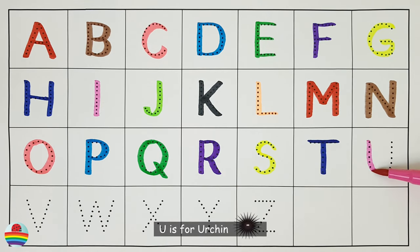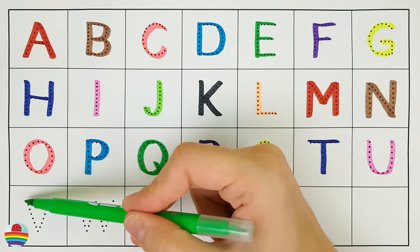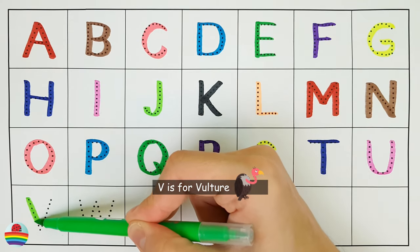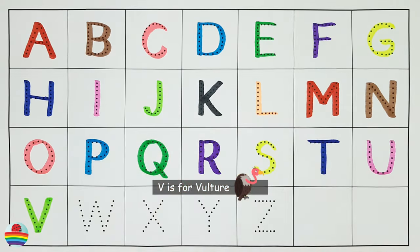U. U is for urchin. U. V. V is for vulture. V.